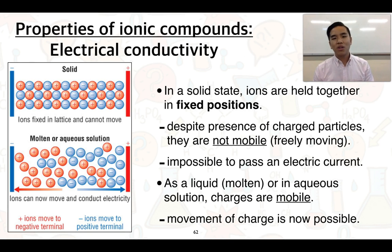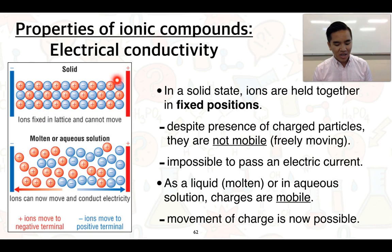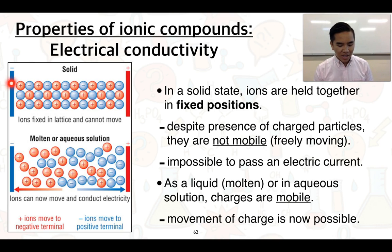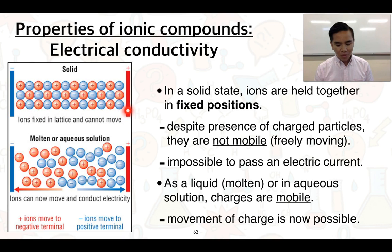The last property we're going to look at is electrical conductivity. Ionic compounds don't conduct as a solid, as explained in a previous video. Looking at the regular structure of an ionic compound, the ions are in fixed positions - they're not allowed to move. If we were to apply a voltage across this ionic compound, the charge cannot actually flow from one end of the terminal to another. So it's impossible to pass electric current through a solid ionic compound.